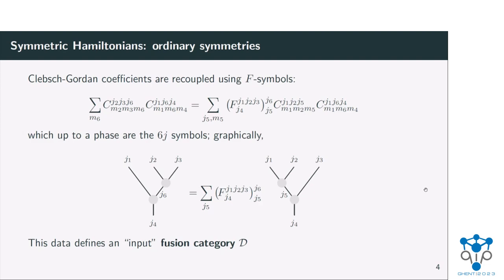Importantly, these Clebsch-Gordan coefficients are recoupled using F-symbols. They satisfy an equation which, when portrayed graphically, tells you that if you first fuse J1 and J3 into J6 and then fuse with J1 to J4, or you do it the other way around, there is some unitary transformation that relates these two processes — and that's exactly what this F-symbol is telling you. This data, this F-symbol, defines some input fusion category D.